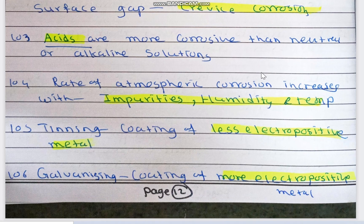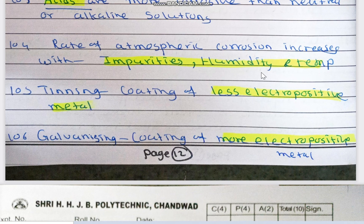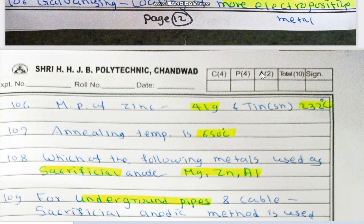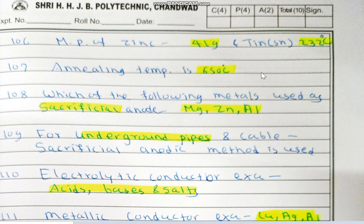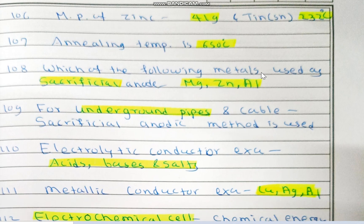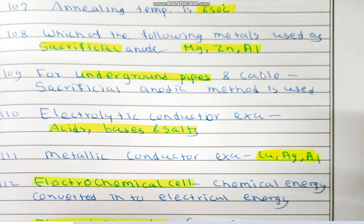Tinning is the coating of a less electropositive metal on base metal (iron), while galvanizing is the coating of a more electropositive metal — zinc — on iron. The melting point of zinc is 419°C while tin is 232°C. In the annealing process, temperature is 650°C, which is used in galvanizing. Metals used as sacrificial anodes are magnesium, zinc, and aluminium. For underground pipes and cables, the sacrificial anodic method is used.